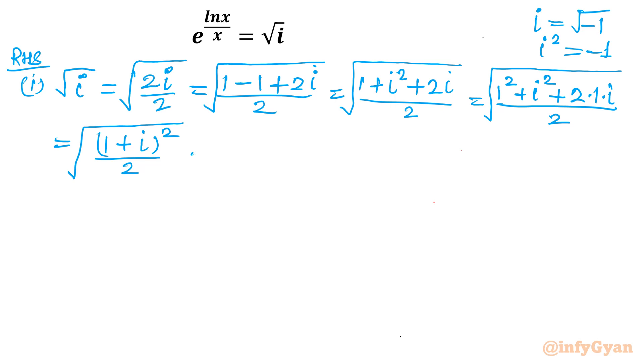So it is actually 1 plus i whole square divided by 2 whole square root. Which is square root and square will be over in the numerator only. So I will write 1 plus i and in denominator there would be square root 2.